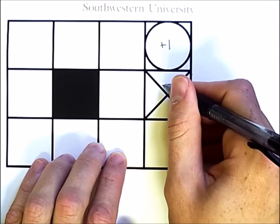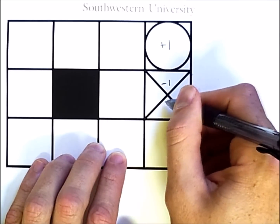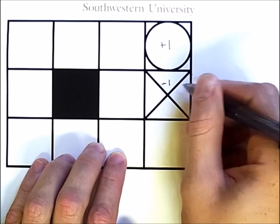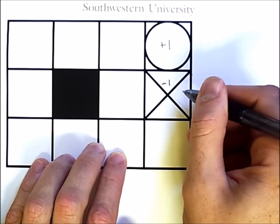It will receive an immediate reward of negative 1 if it enters this square that has the x in it, after which point the evaluation will end.